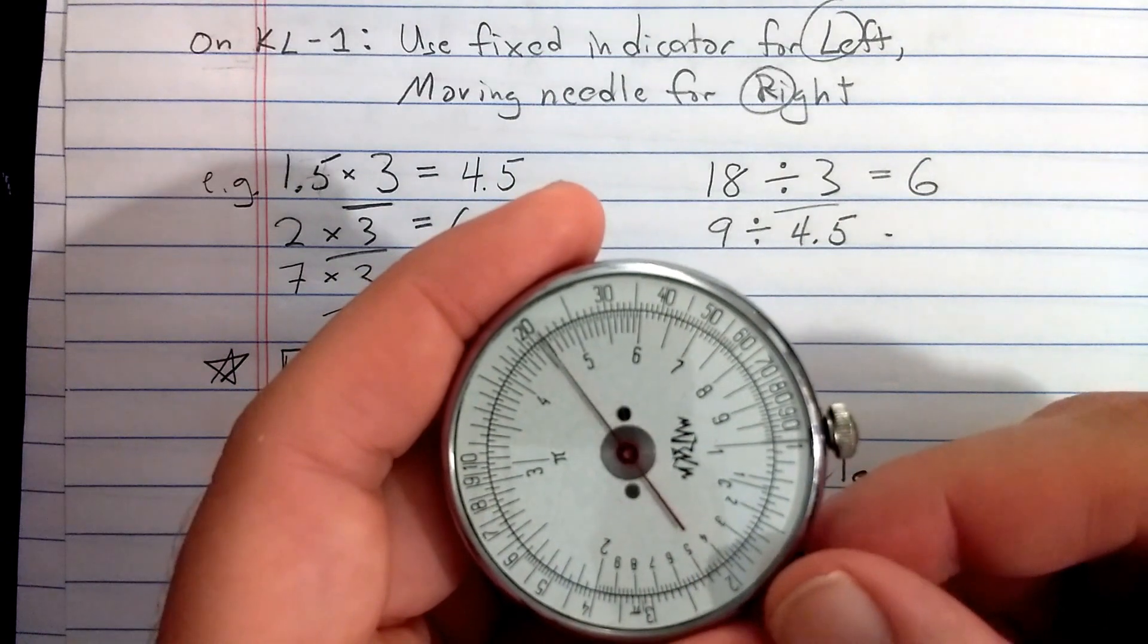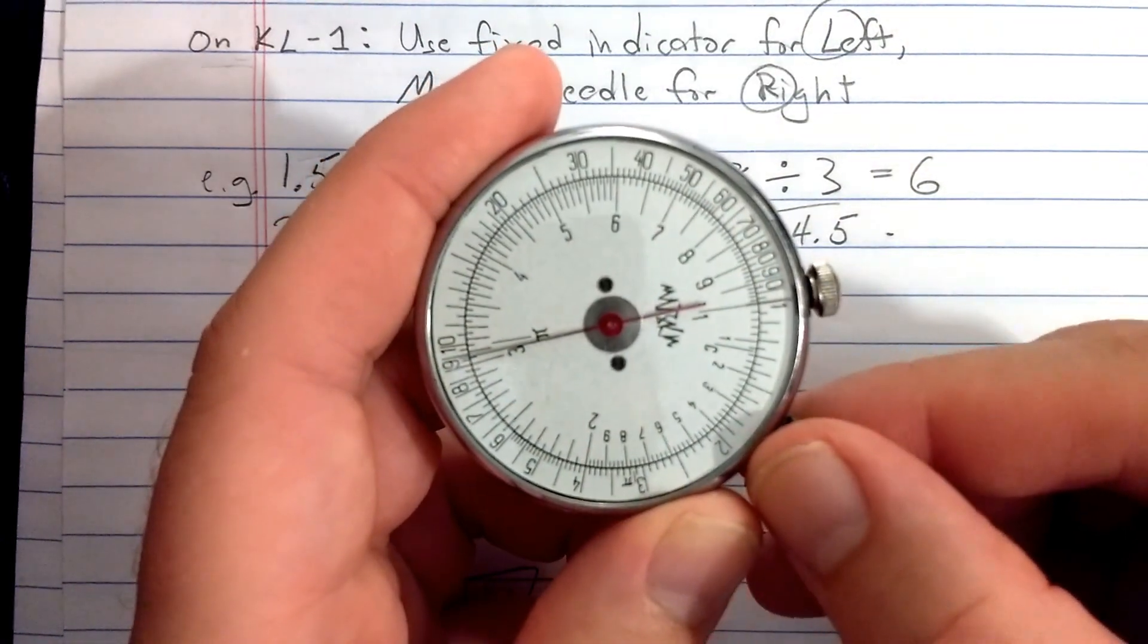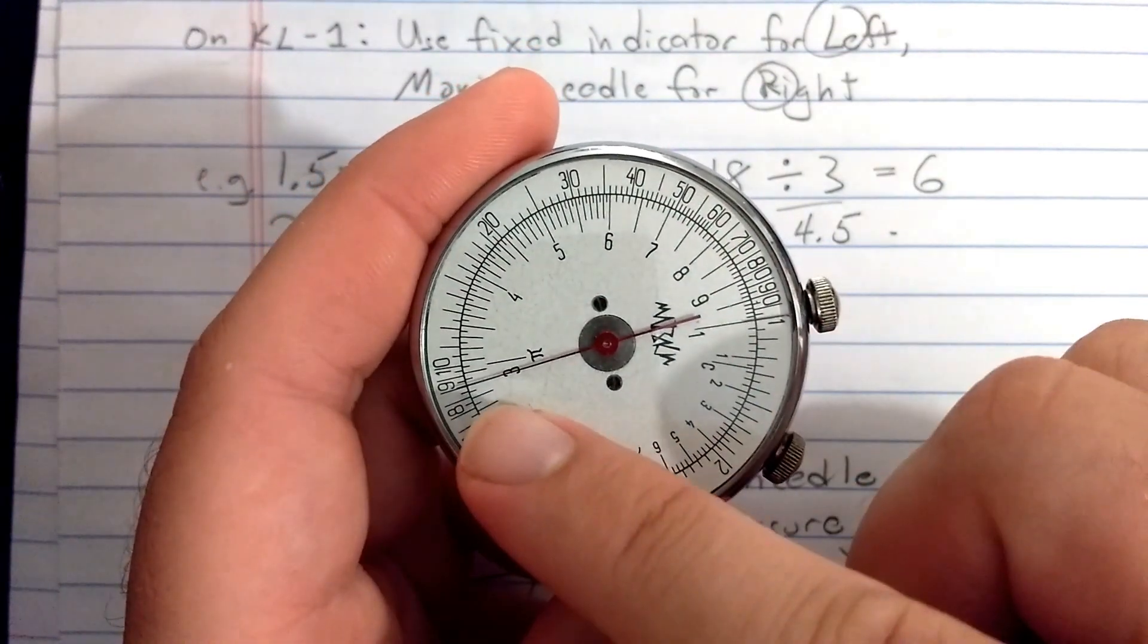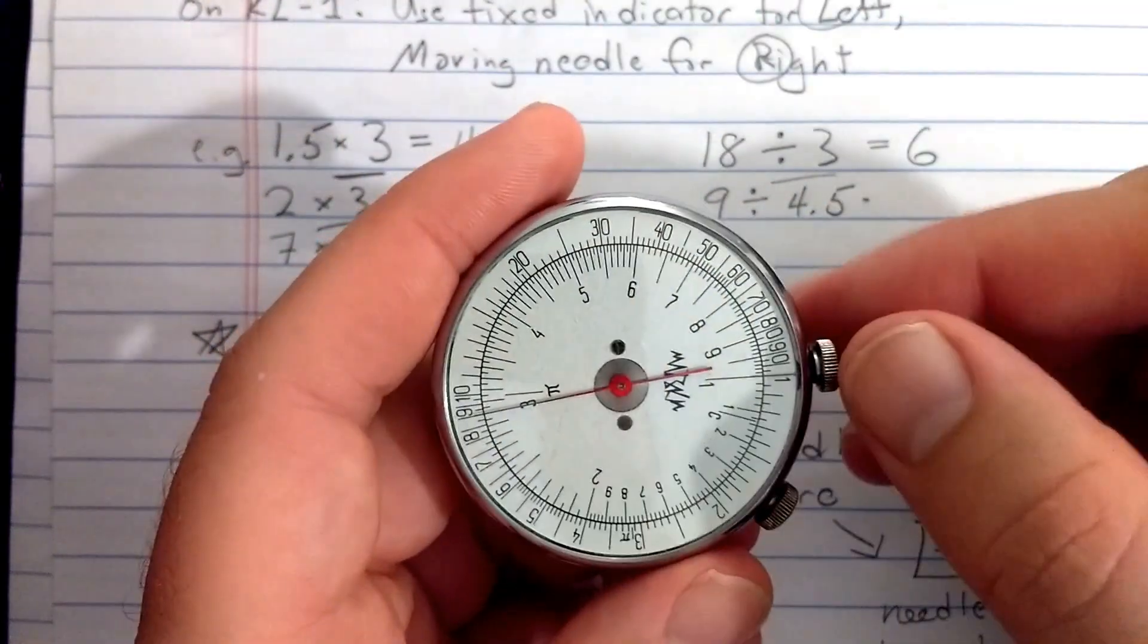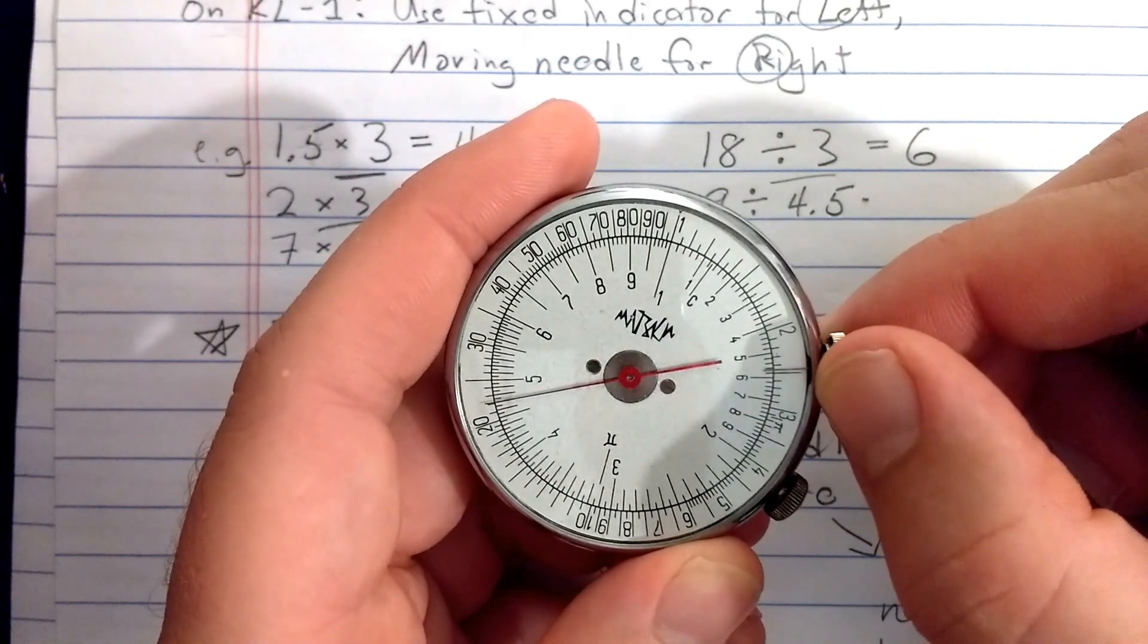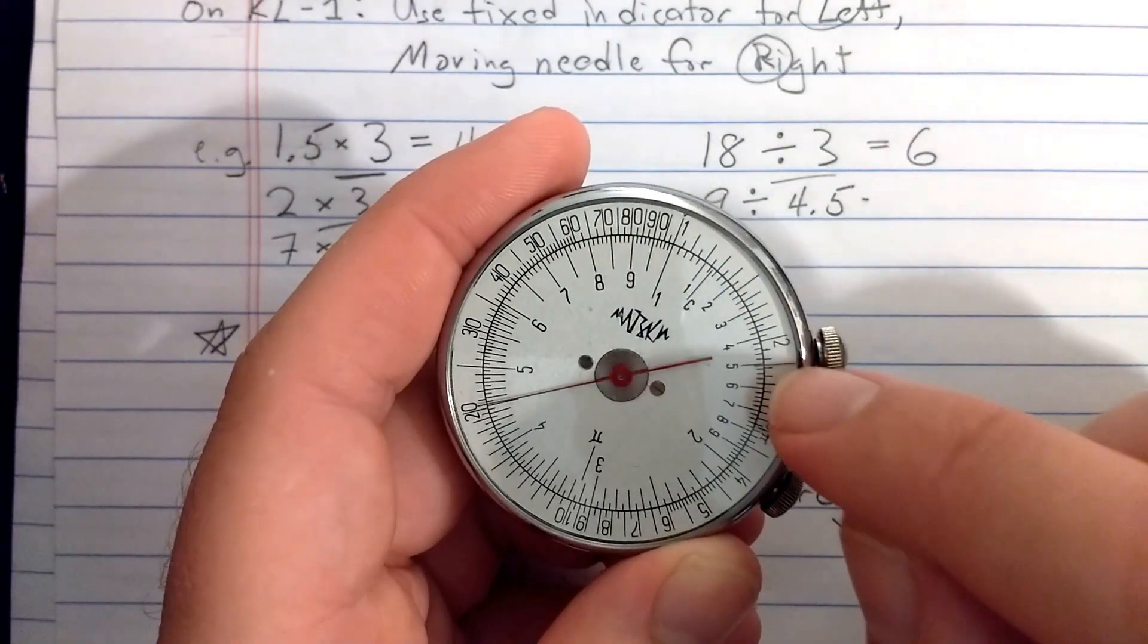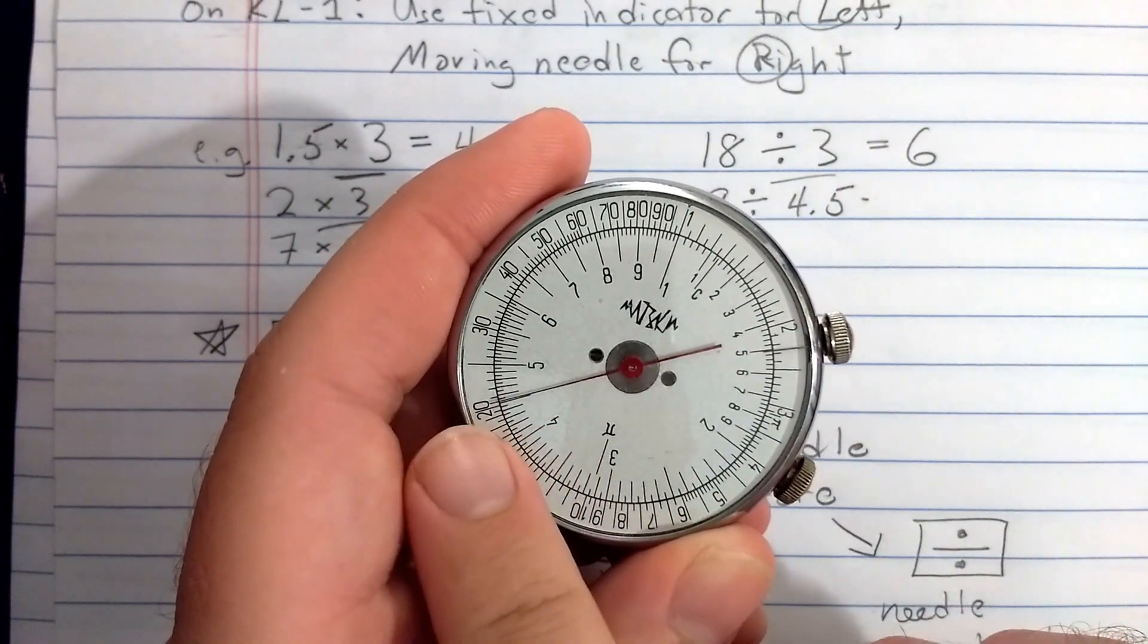So the operand I want here is 3, so I'm using the inner scale. So from here to here, my calipers are measuring that log of 3 distance. So to multiply by 1.5 then, I simply move the caliper until the left end of the caliper is on 1.5, and then of course it reads results on the other end of the caliper, 4.5.